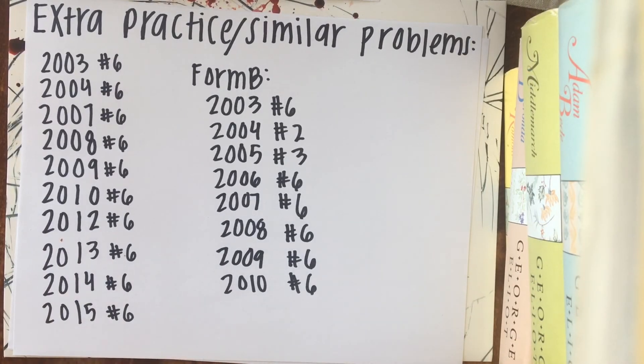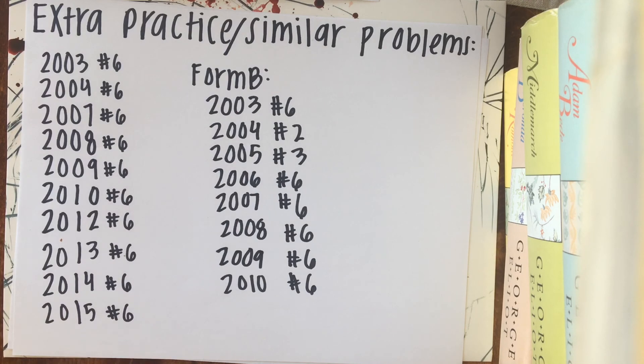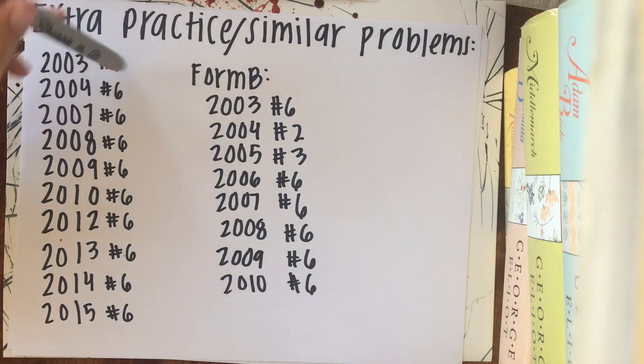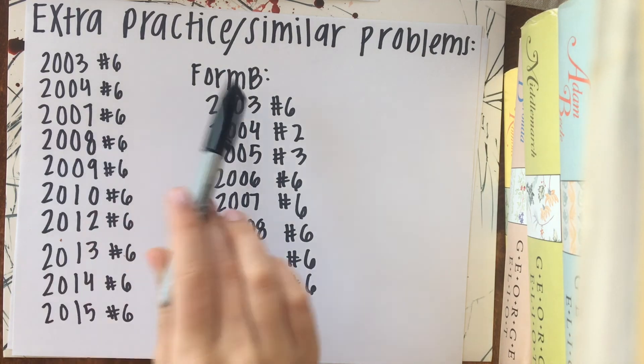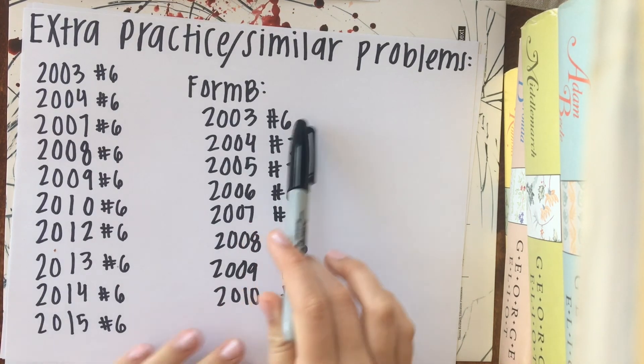I hope this video was helpful. And if you want any extra practice on similar problems on past AP tests, you can pause the video here and see there are all of these problems. It's usually number 6 that are very similar and are going to give you more practice with these concepts. And then also for form B of the FRQs, these are other numbers.